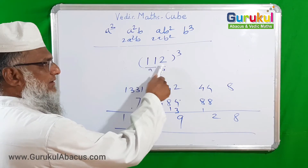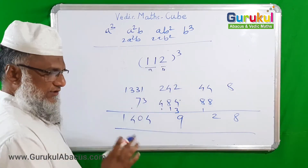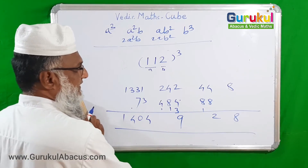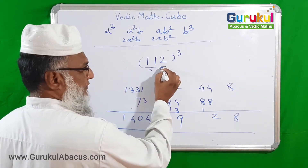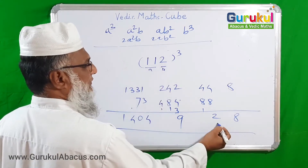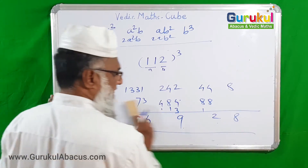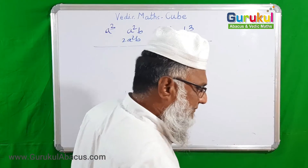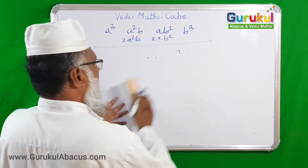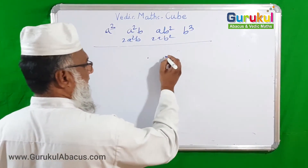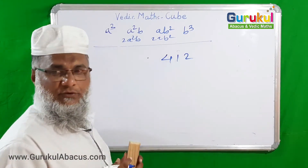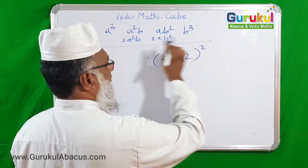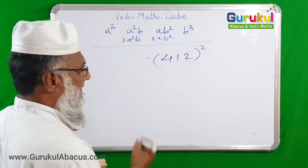Now one more example. In the previous example our second group had only one digit — just one digit. Now I want to take a similar type of example: finding cube of 412. I want to solve this by using the same method and same formula.